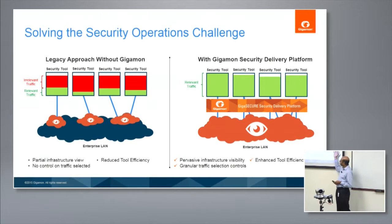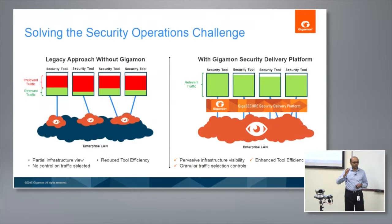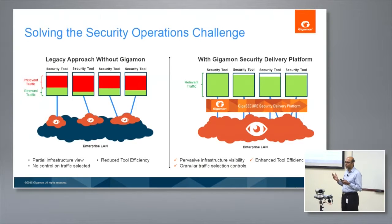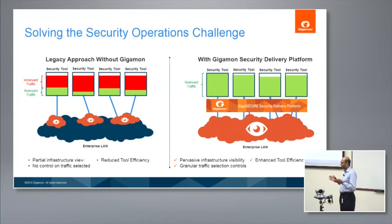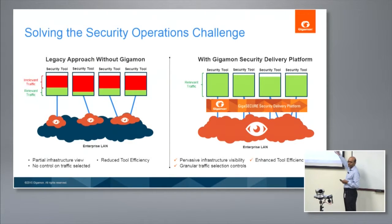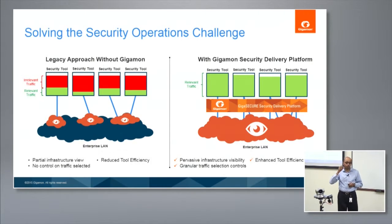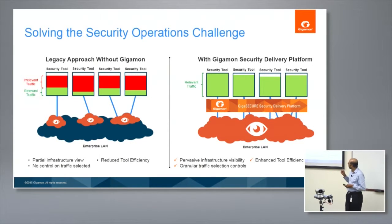An alternative mechanism: wouldn't it be nice if you could have a view into the entire infrastructure and have selective control of what you want to look at? That really is the core premise of what a security delivery platform is. On the surface it might look almost too simple, but the key thing to note is that the selective control of what traffic to extract has not really existed to date.